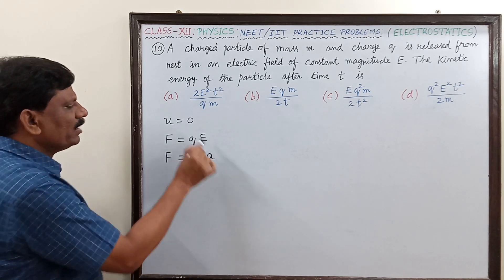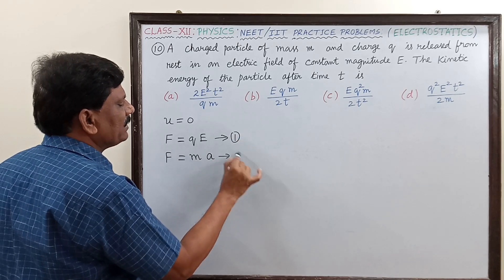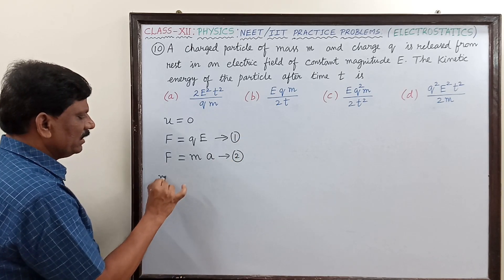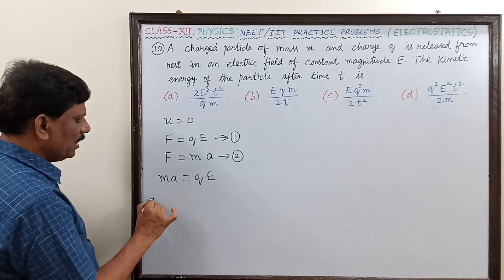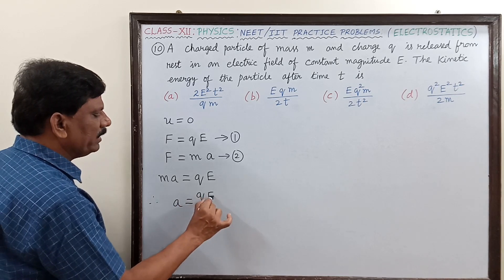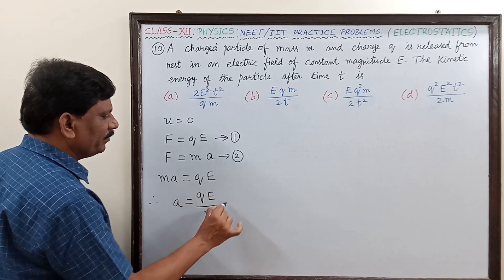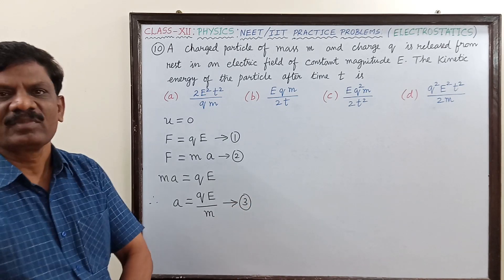Equating these two equations, m into a is equal to q into E. Or, a is equal to qE divided by m. This is equation number three.